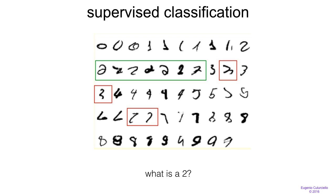What really makes a number two? We see lots of examples here that are quite different from each other and could be somehow confusing. If they are confusing for a human, they could be even more confusing for a machine, and it's even harder to write a program to really distinguish them.